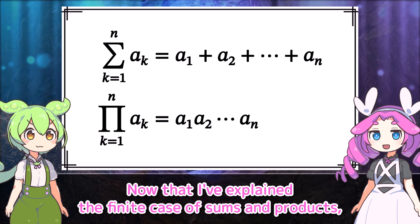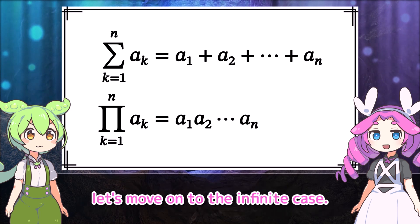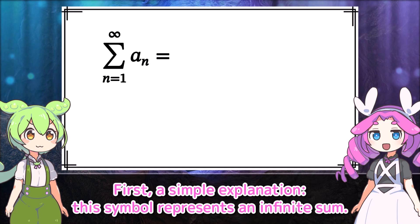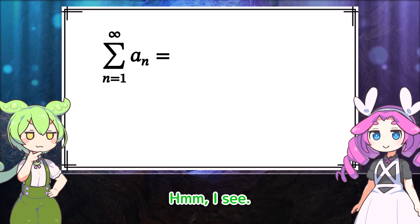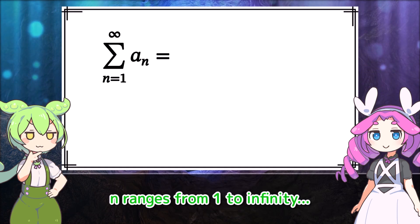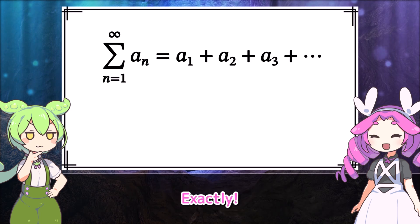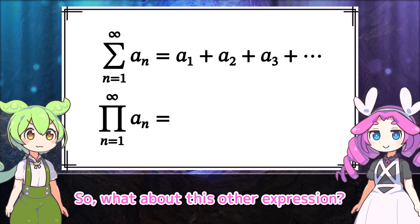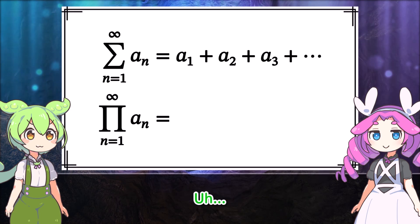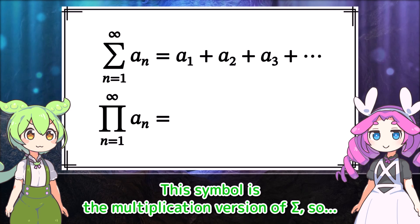Now that I've explained the finite case of sums and products, let's move on to the infinite case. First, a simple explanation. This symbol represents an infinite sum. It ranges from 1 to infinity, so that means the sum a_1 plus a_2 plus a_3 plus and so on continues infinitely. Exactly.